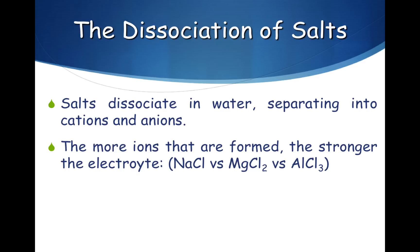Let's consider the dissociation of sodium chloride, magnesium chloride, and aluminum chloride in water. When sodium chloride dissolves in water, it breaks apart into the sodium +1 ion and the chloride negative ion. The water breaks the electrostatic attraction between the sodium ion and chloride ion, and they are allowed to separate. In order for you to know the charge of each of the ions, you must go to the periodic table.